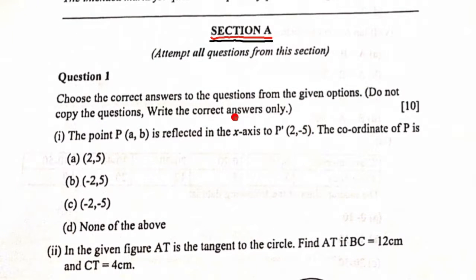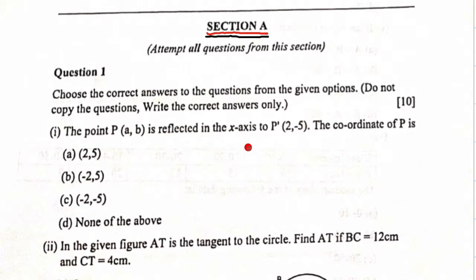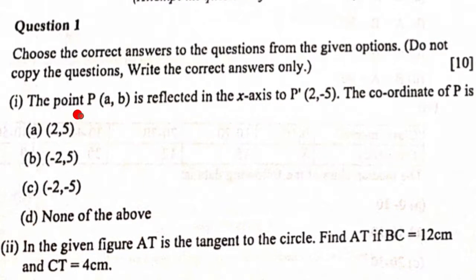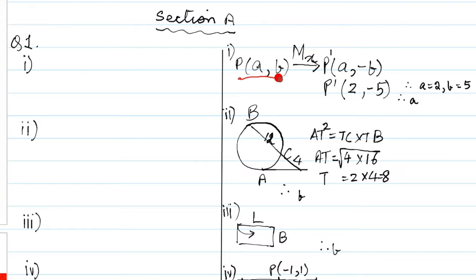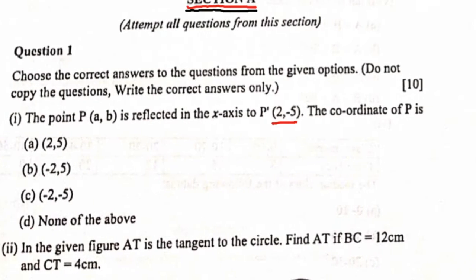Section A: choose the correct answers to the questions from the given options. We have the first one: point P(a, b) is reflected in the x-axis to P dash which is (2, -5). The coordinate of P is? If we have P(a, b) with reflection in x-axis, it becomes (a, -b). But your P dash, which is the reflection, is (2, -5), then a is 2 and b is 5. So the option is A.